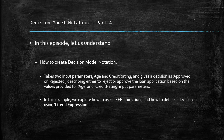We will use the same example which takes two input parameters — age and credit rating — and gives the decision as approved or rejected, describing whether to reject or approve a loan application based on the values provided for the age and credit rating input parameters. While defining this DMN, we will look at how to define a FEEL function and how to use it within the decision element inside the DMN.